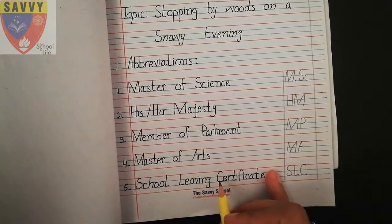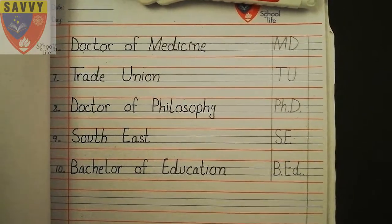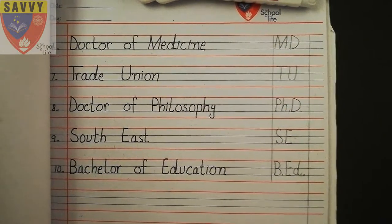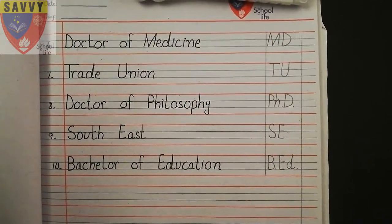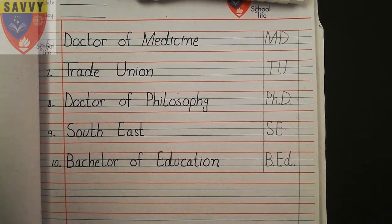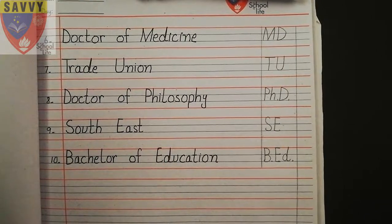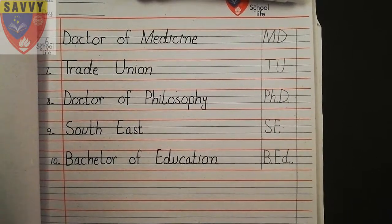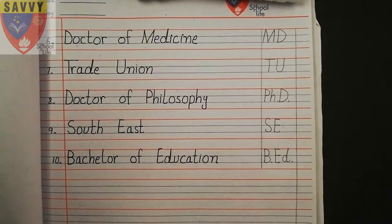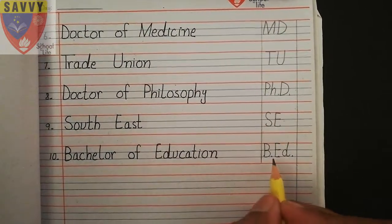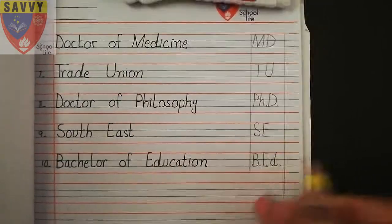Next is School Leaving Certificate (SLC). Number six is Doctor of Medicine (MD). Number seven is Trade Union (TU). Number eight is Doctor of Philosophy (Ph.D.). Second last is South East (SE). And the last one is Bachelor of Education (B.Ed.).